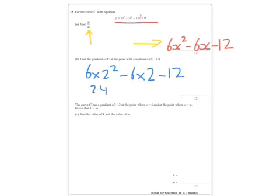Alright, so we get 24 minus 12 minus 12, which equals 0. So it's actually a turning point. They might have called it a turning point.